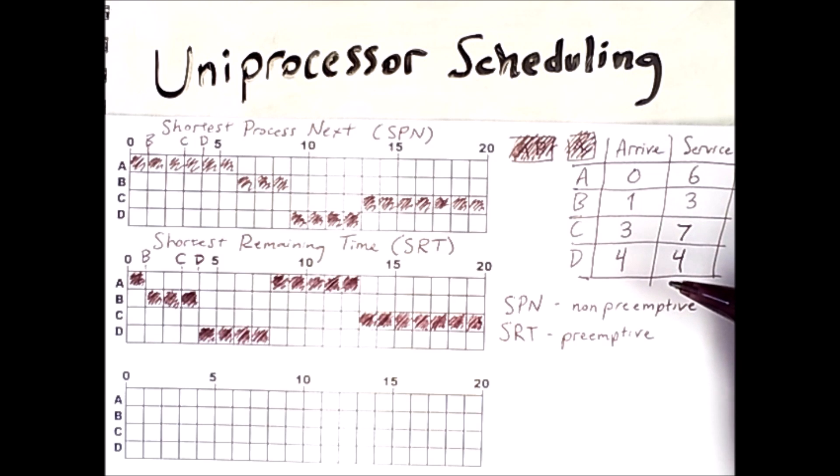But what if processes with run times less than seven had kept showing up in the system? They would keep jumping in line in front of C and C would never get to run. That's starvation.